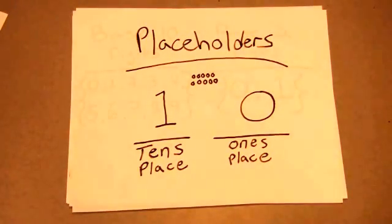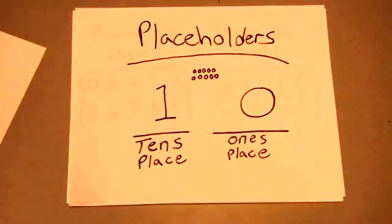So with placeholders, we can combine our symbols to represent amounts over nine. So we create a tens place and a ones place. And we can say that we have one tens, or ten, plus zero ones. And if we wanted to represent 11 objects, we could say that we have one ten plus one one. To represent 12 objects, we can say that we have one ten and two ones and so on until we hit 99 and eventually have to add a hundreds place. But you get the idea.